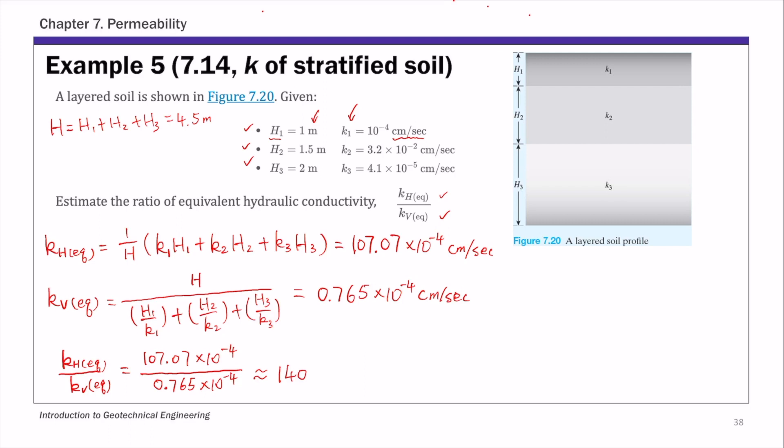Again, if you recall what we discussed in class, typically in natural soil, the hydraulic conductivity in the horizontal direction is much larger than the hydraulic conductivity in the vertical direction. And this is due to naturally how soils are deposited, because the layers are typically horizontal. And then this ratio here for this example, this horizontal hydraulic conductivity is 140 times the vertical one.